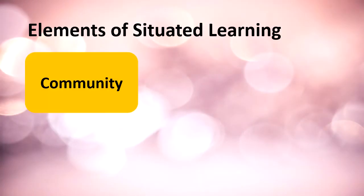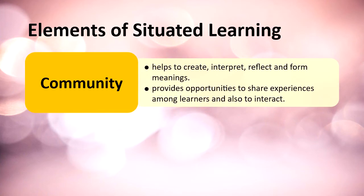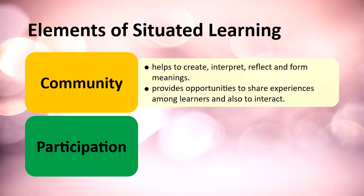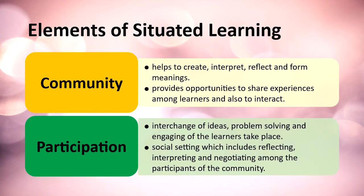The next element is community. Community basically helps to create, interpret, reflect, and form meanings. It provides opportunities to share experiences among learners and to interact with each other. Community is an important aspect of situated learning. The fourth element is participation. If learners are learning in the community, their participation is important. Participation means interchange of ideas, problem solving, engaging learners in social settings, which include reflecting, interpreting, and negotiating among the participants of the community.